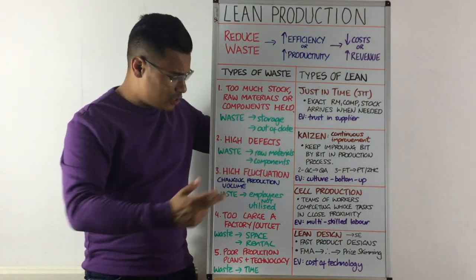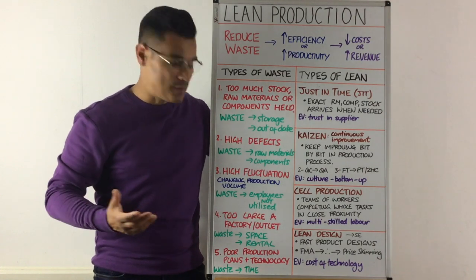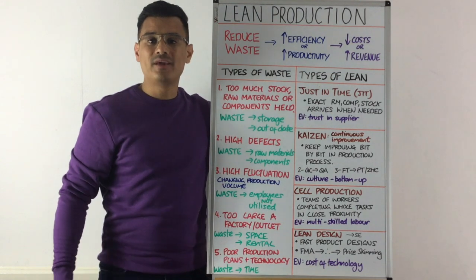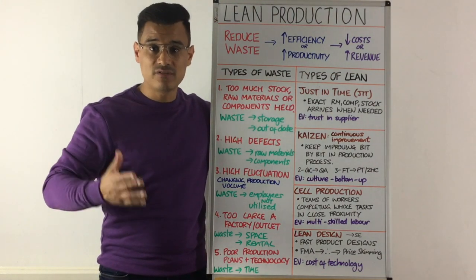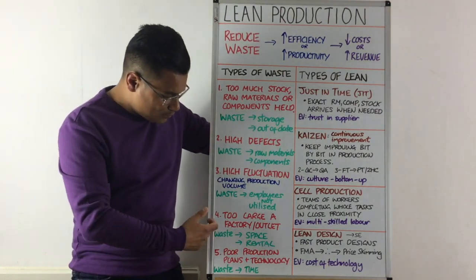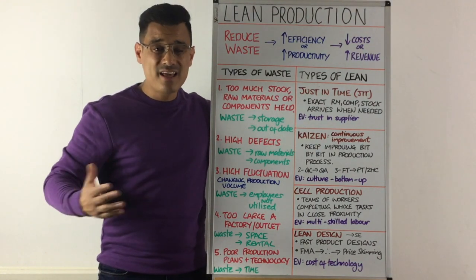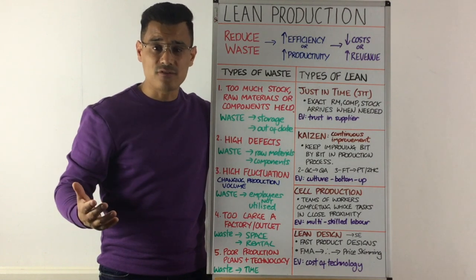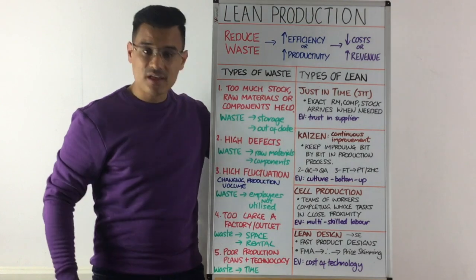The next is high fluctuation. Maybe you've got an ever-changing production volume — maybe it's a seasonal business — and there's a waste in the fact that you've got lots of full-time employees and they're not being utilised all the time or all year round. The fourth is you've got too large a factory: maybe you've got a factory that's 500 square foot and you only need one that's 100 square foot, and that's a waste in terms of rental cost and space.